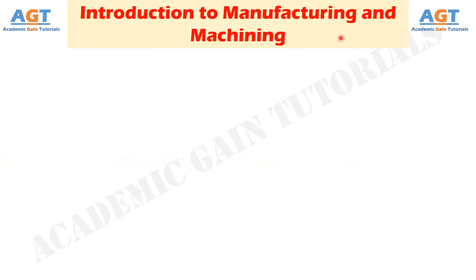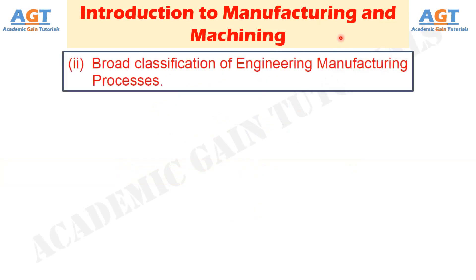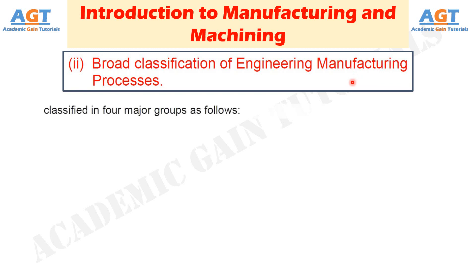It is extremely difficult to tell the exact number of various manufacturing processes existing and being practiced presently, because a spectacularly large number of processes have been developed till now and the number is still increasing exponentially with the growing demands and rapid progress in science and technology. However, all such manufacturing processes can be broadly classified in four major groups.